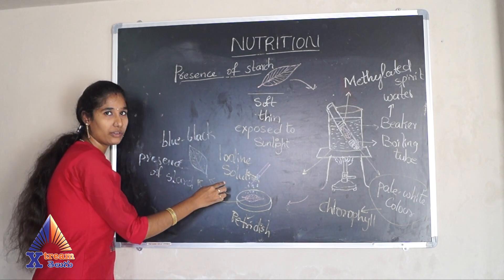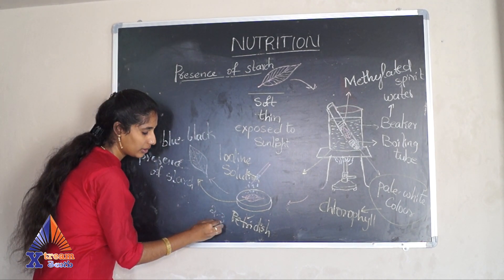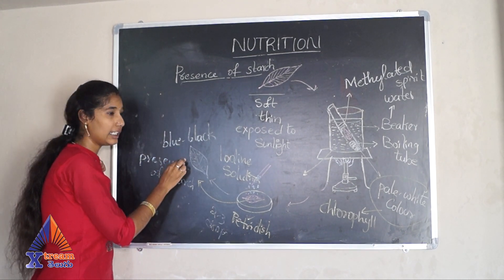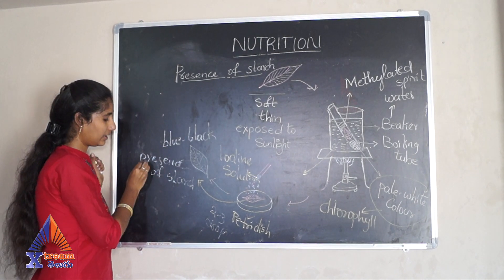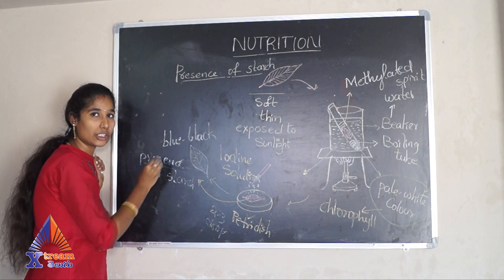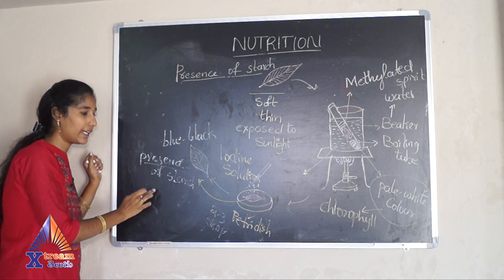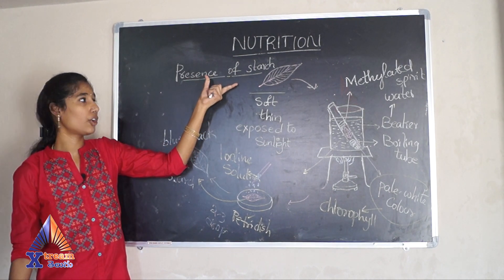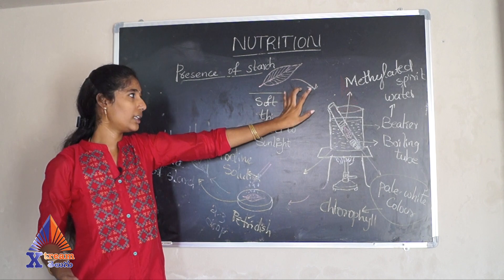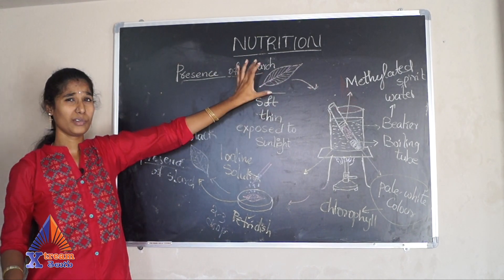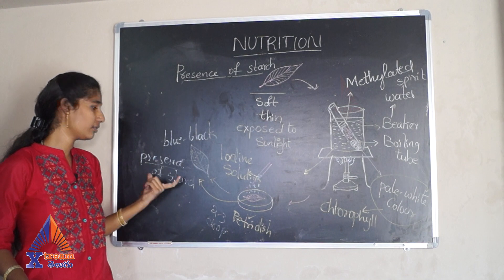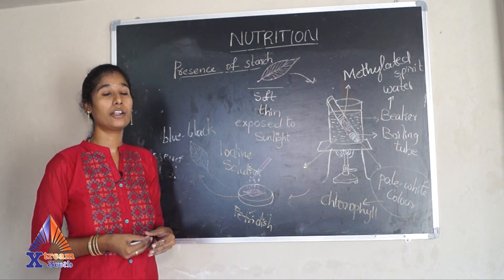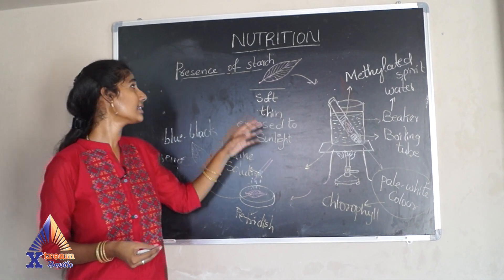We add 2 to 3 drops of iodine solution onto the leaf in the petri dish. If the leaf changes to a bluish-black color, it indicates the presence of starch. By this experiment, we can identify that the leaf contains starch, and conclude that the leaf has undergone autotrophic nutrition through photosynthesis.